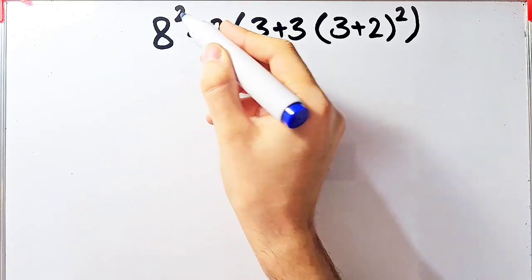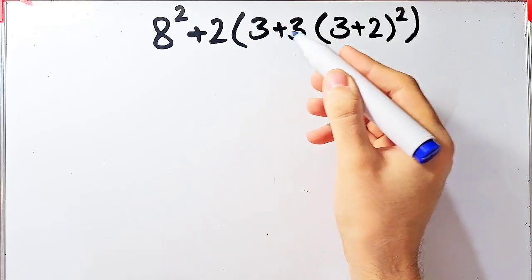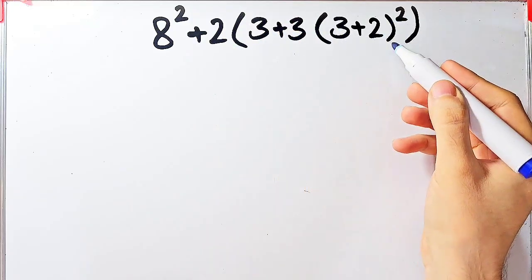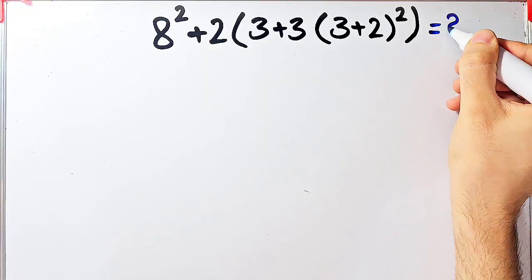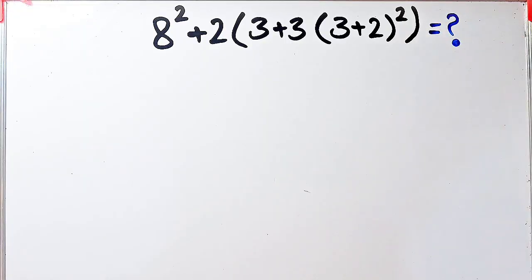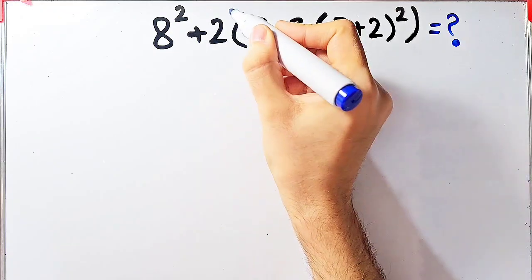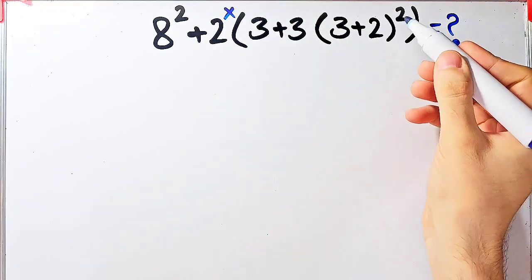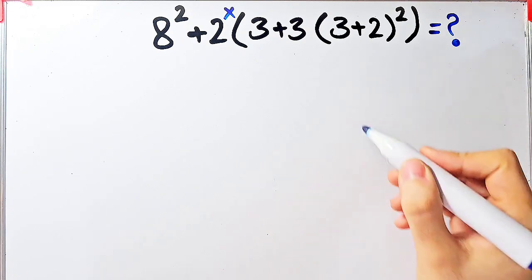The first question is: 8 to the power of 2, plus 2 times 3, plus 3 times open parentheses 3 plus 2 close parentheses, then all of them to the power of 2. In this question we have exponent, addition, multiplication, and parentheses. To solve this question we need to follow the order of operations, which is PEMDAS.